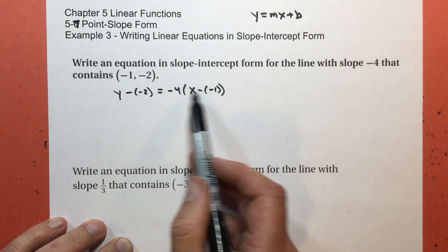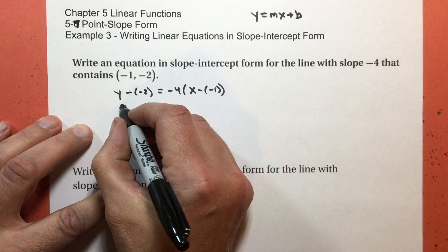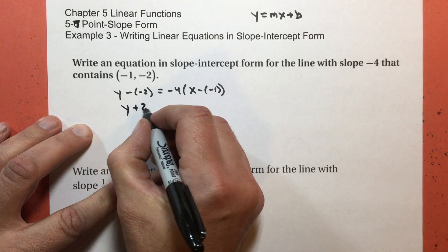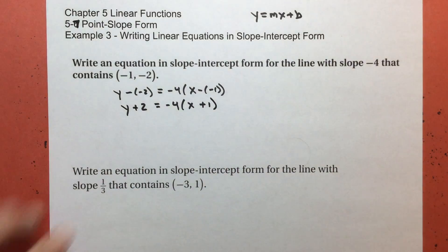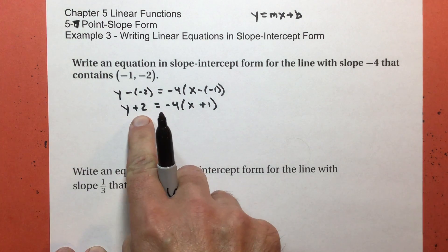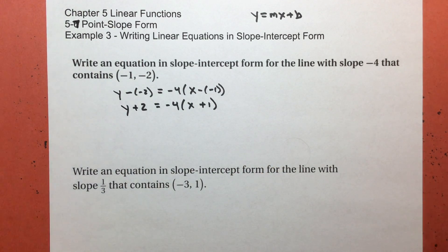Now I'm going to simplify my subtraction here. I get y plus 2 equals negative 4 times x plus 1. And in the previous video, that's where we stopped. I said you could also move that over to the other side. We're going to do that. But we're also going to do one more step, or actually maybe a couple more steps.